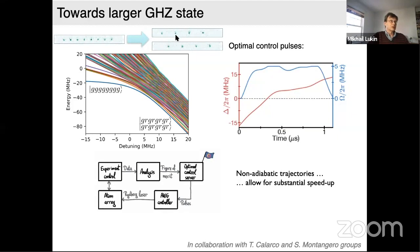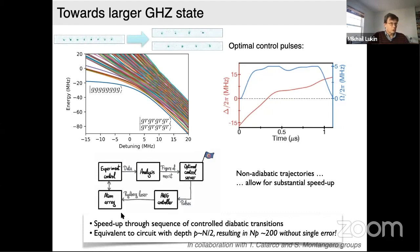For example, we can prepare the GHZ state for eight atoms. One important point: this technique works through a series of controlled diabatic transitions. If you convert it into an equivalent circuit, the circuit depth times number of atoms product is around 200 without making any single error. From that you can estimate the gate error probability in our system.